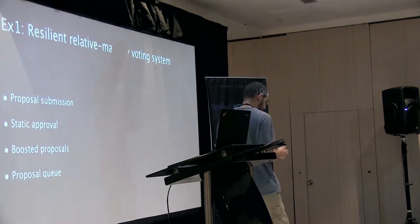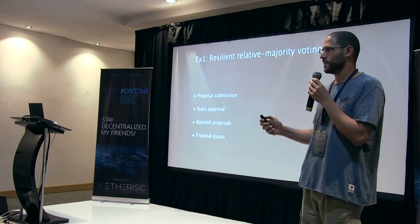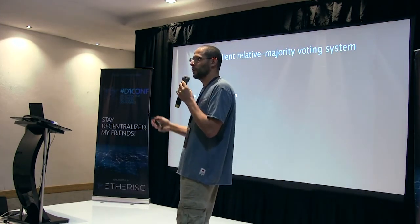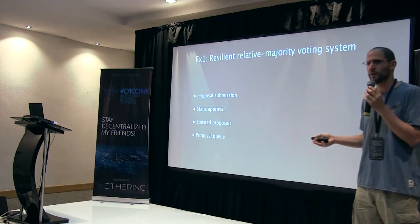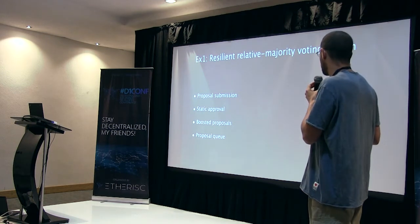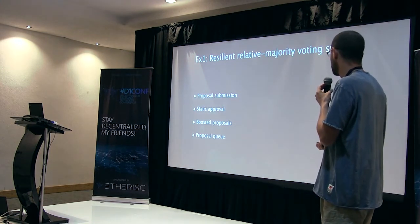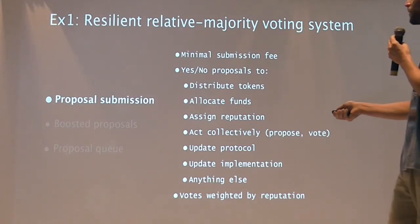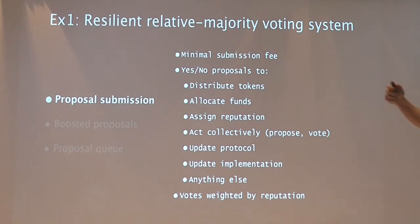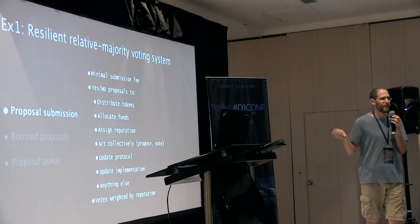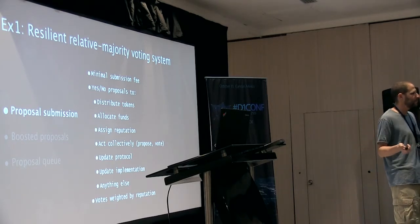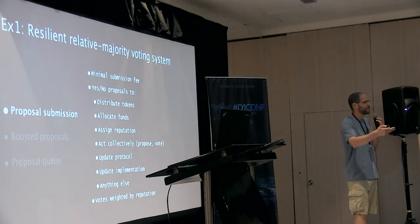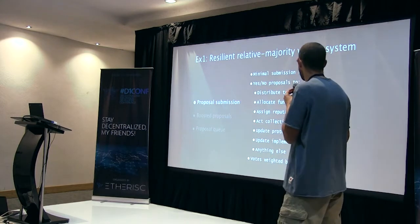Let's take a concrete example. I want to propose one simple voting system which is decentralized, resilient, and to some degree scalable. I'll try to describe the entire protocol. There are three stages: proposal submission, boosted proposals, and the proposal queue. This is a proposal-based system — not every decision system is proposal-based, but a proposal is the simplest approach. Anyone can submit a proposal — again, openness. There is a minimum submission fee, and the proposal is essentially yes or no.